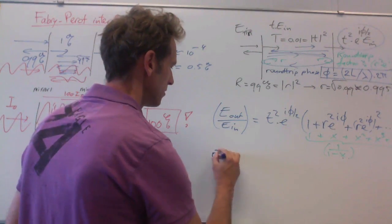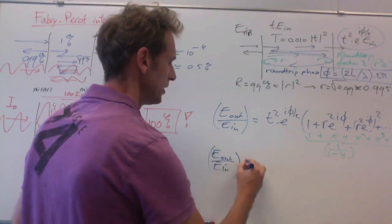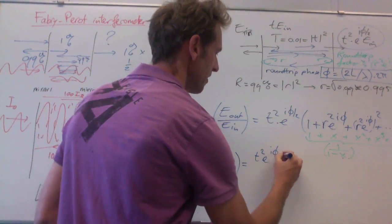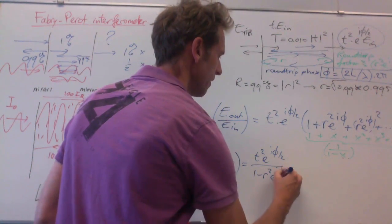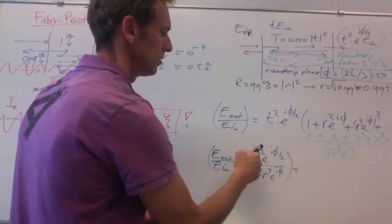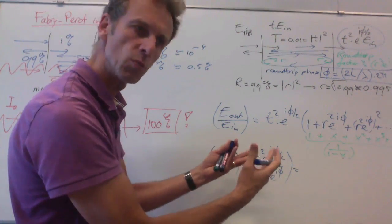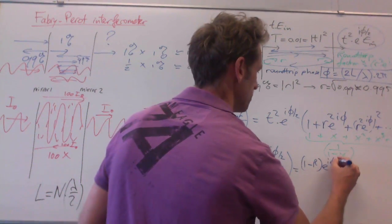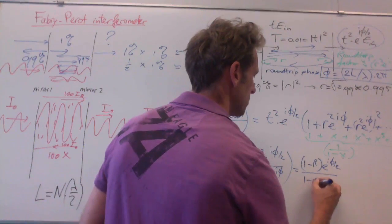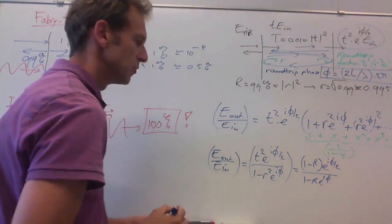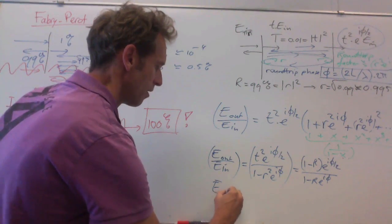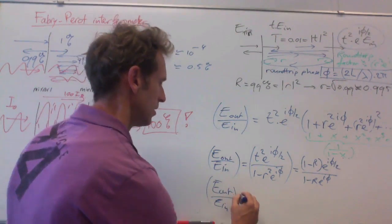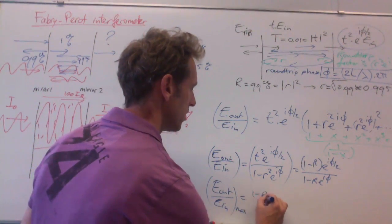And if you do that, you'll find that the ratio between the output and the input field amplitudes is given by t² e^(iφ/2) divided by 1 minus r² e^(iφ), which you can rewrite with t² is 1 minus R, as this expression (1 - R)e^(iφ/2) divided by 1 minus Re^(iφ).